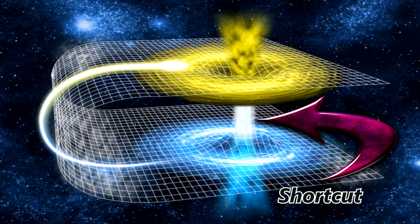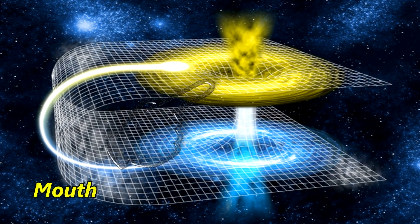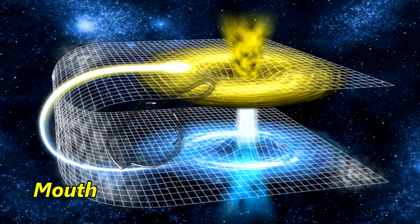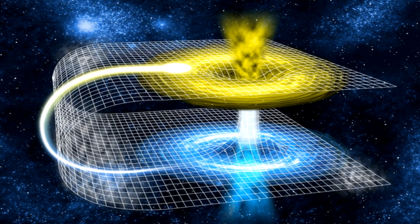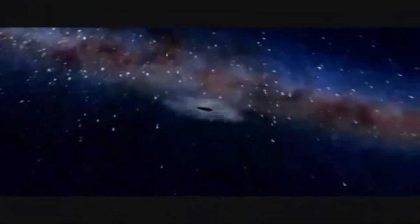Wormholes contain two mouths with a throat connecting the two. The mouths would most likely be spheroidal. The throat might be a straight stretch, but it could also wind around, taking a longer path than a more conventional route might require.